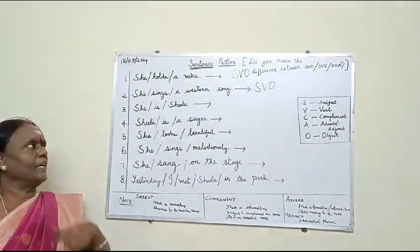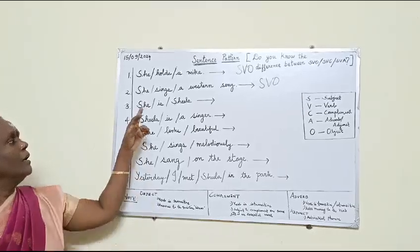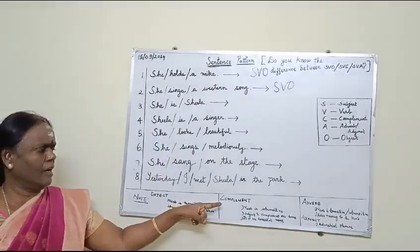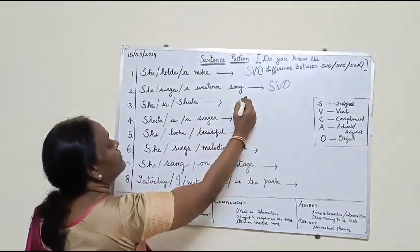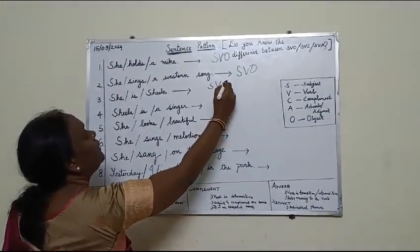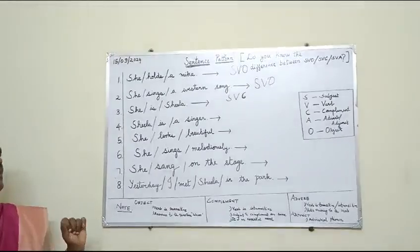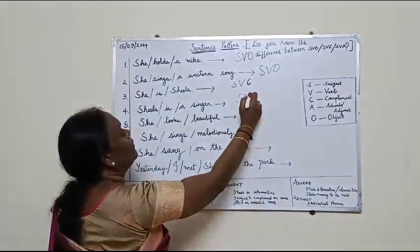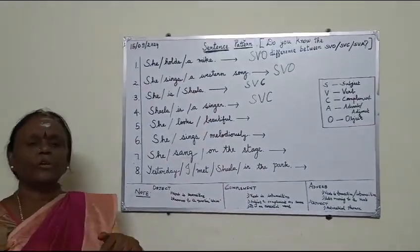Let me go to the next pattern. Look at sentences number 3, 4 and 5. All these three sentences take a complement. Why do I say they take a complement? Because the verb is intransitive. So, S is she, V is the verb, and Sheila is the complement. Sheila and she denote the same person — that is a subject complement. Similarly, she is the singer, and her name is Sheila. How does she look? She looks beautiful.